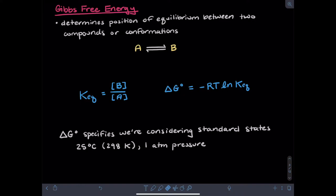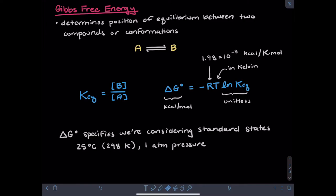Before we move on, I want to talk about the units in this equation. In this class we're going to work in units of kilocalories per mole for delta G. For these units our appropriate R constant is going to be 1.98 times 10 to the negative third, with units of kilocalories per Kelvin mole. Here your temperature needs to be in Kelvin, and the term natural log of the equilibrium constant is unitless.